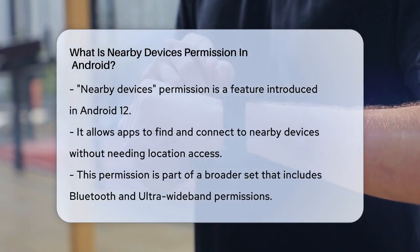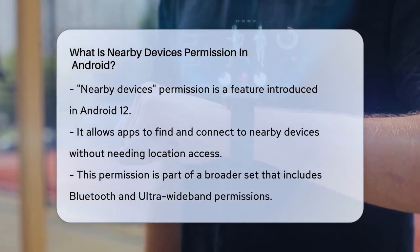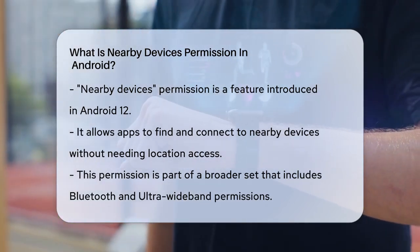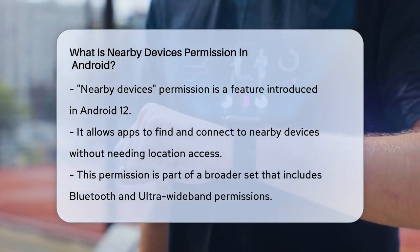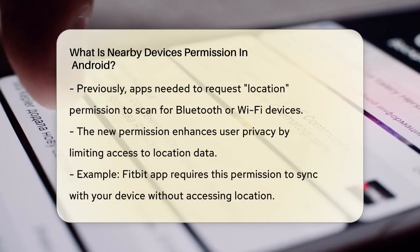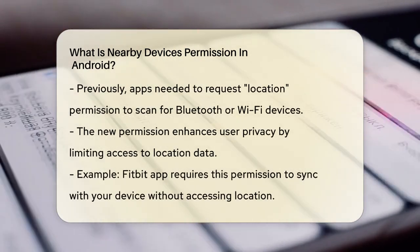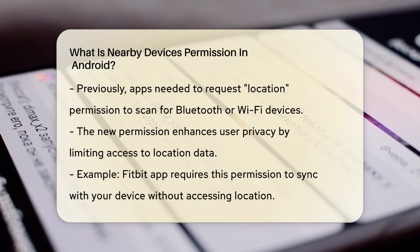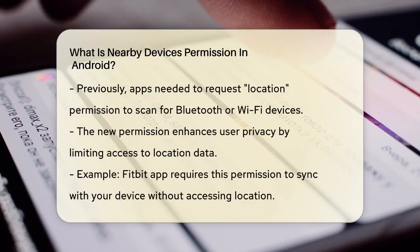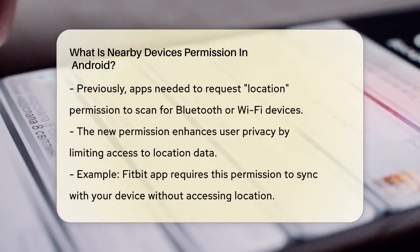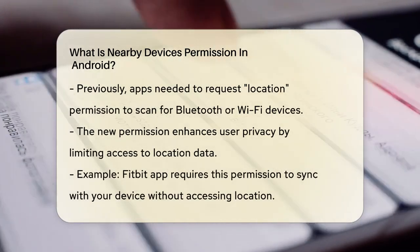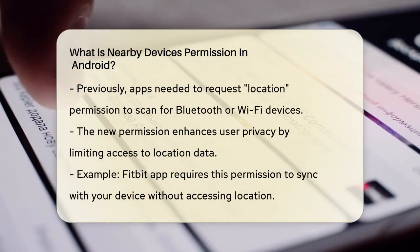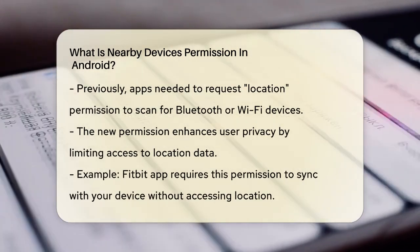Before Android 12, apps that needed to scan for nearby Bluetooth or Wi-Fi devices had to request the broader location permission. But now, with the nearby devices permission, apps can do this without accessing your precise location, which is a step towards better privacy.